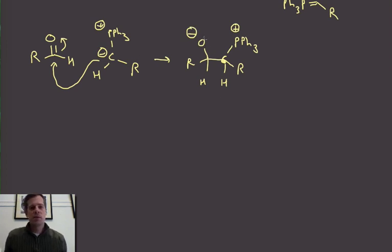And now we've transferred the negative charge from carbon up onto this oxygen. So now we have this situation where we've got a negative charge and a positive charge that are actually four atoms away. And this has a special name which is called a betaine. A betaine.